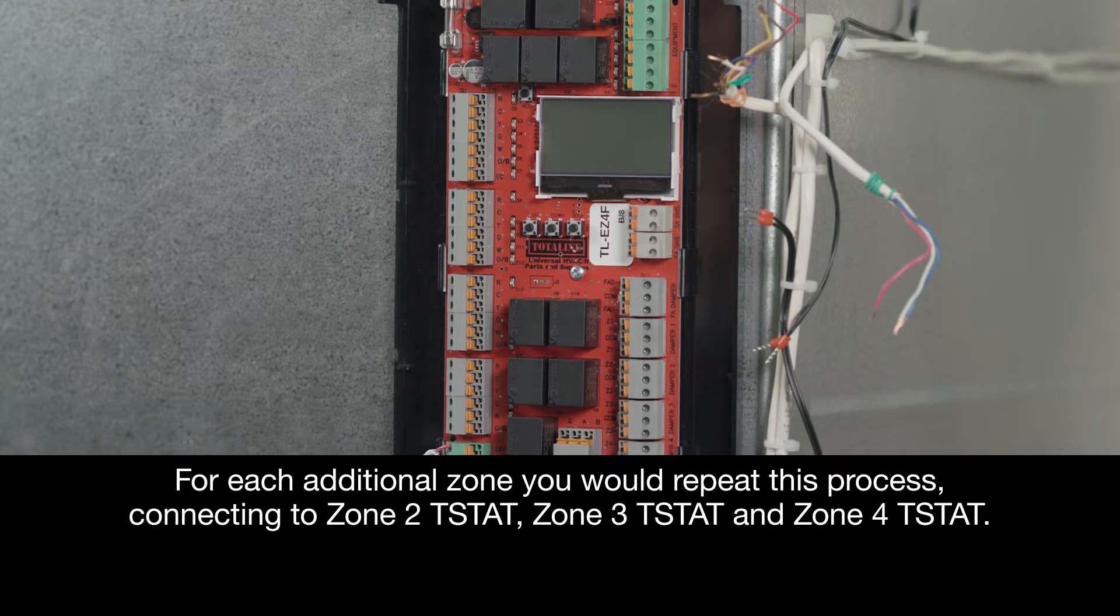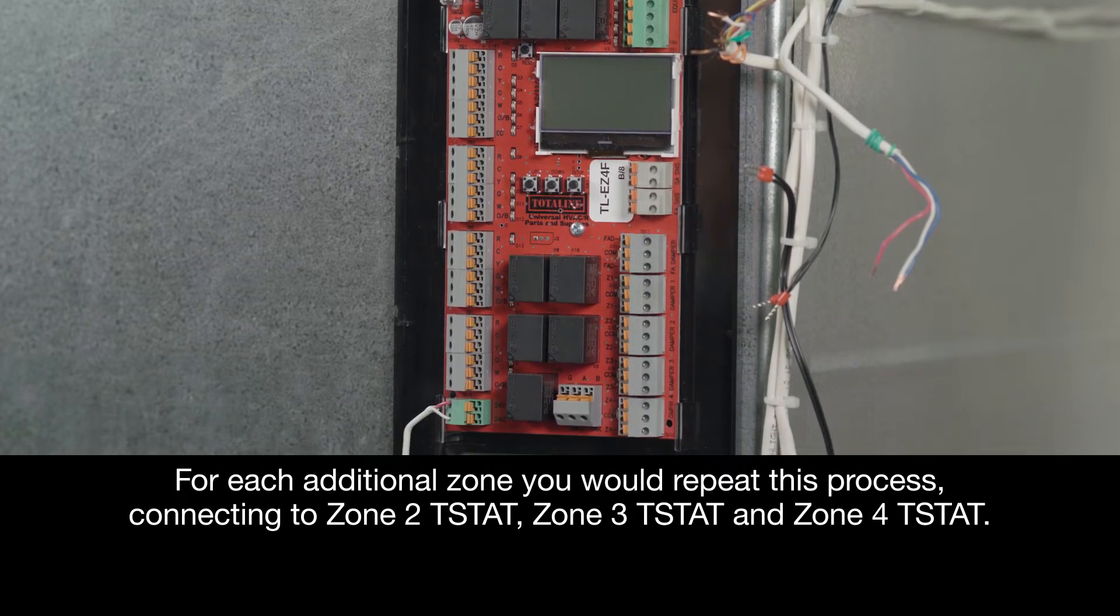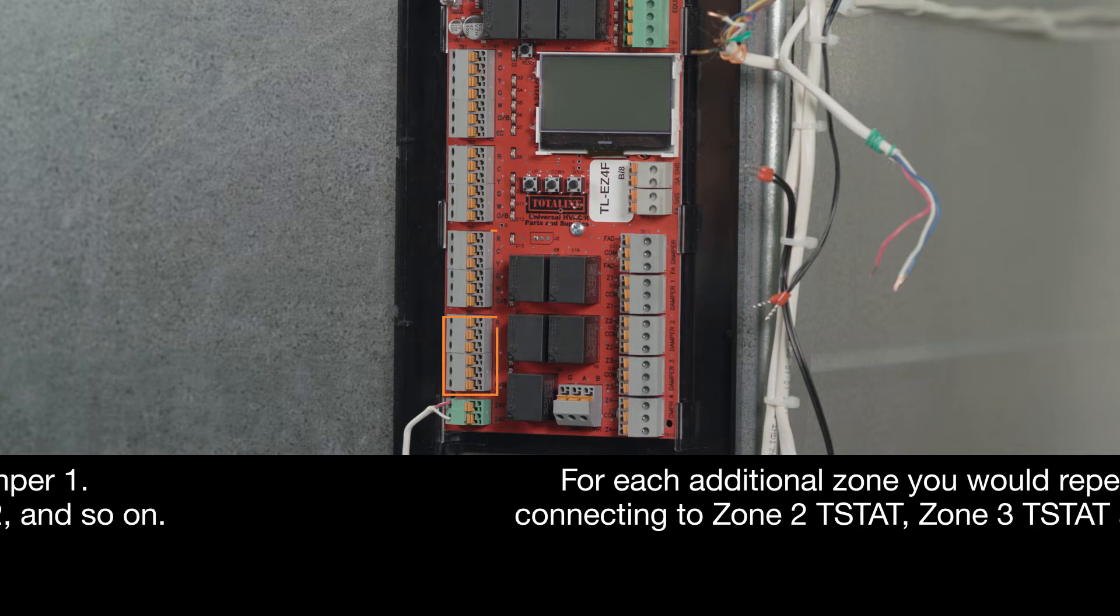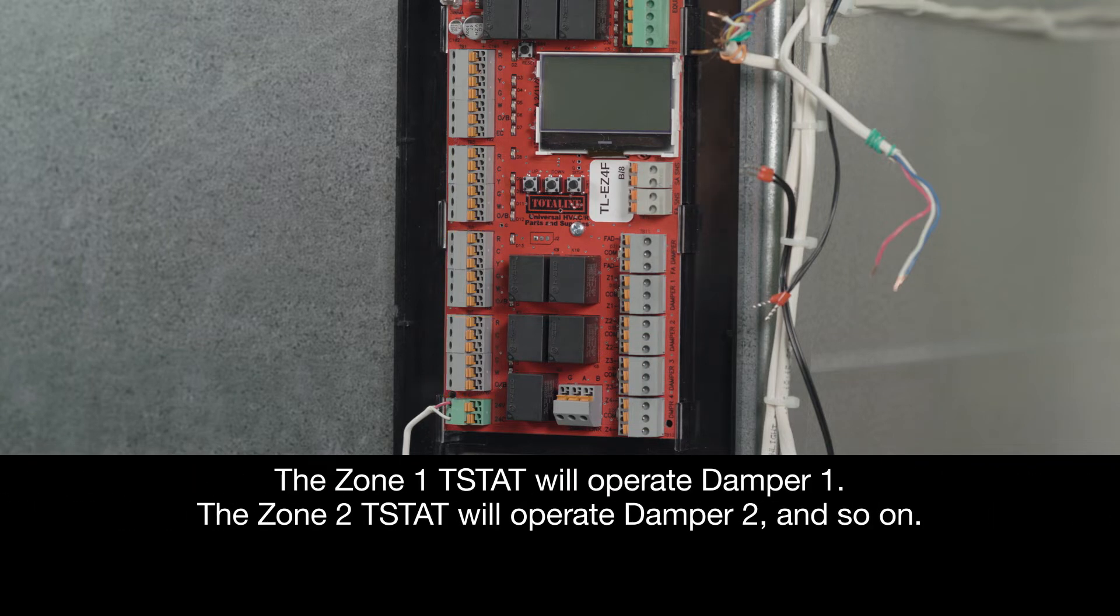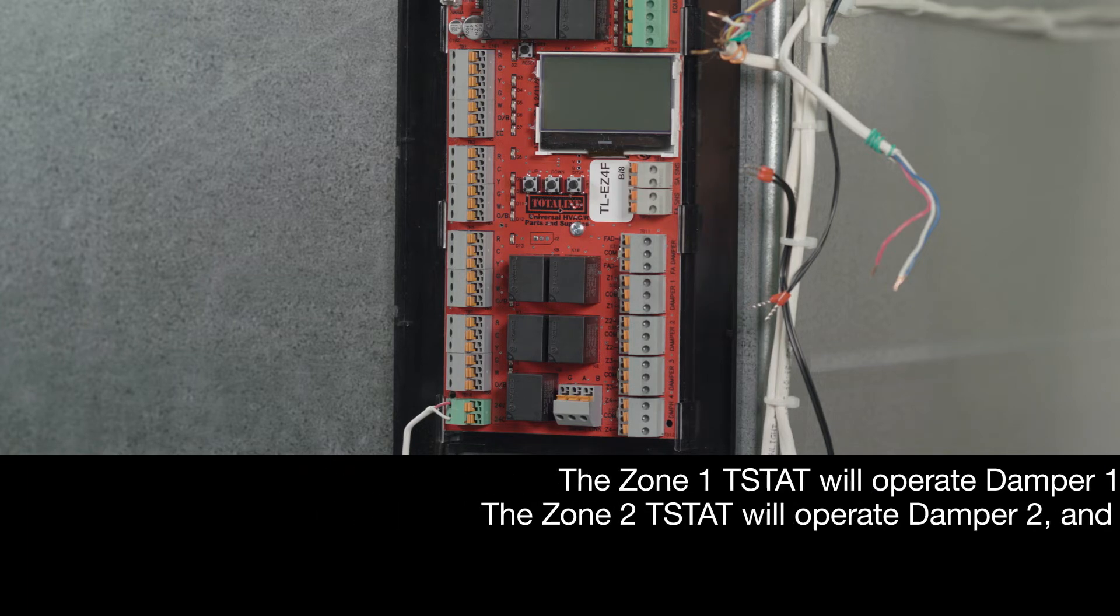For each additional zone, you would repeat this process, connecting to Zone 2 T-STAT, Zone 3 T-STAT, and Zone 4 T-STAT. The Zone 1 T-STAT will operate damper 1, the Zone 2 T-STAT will operate damper 2, and so on.